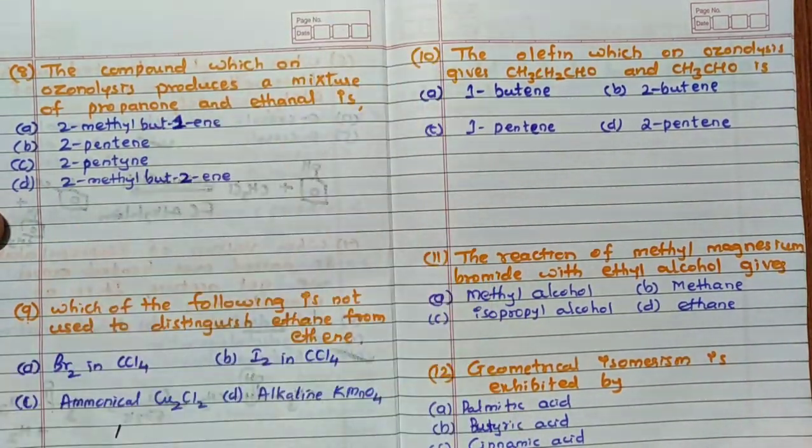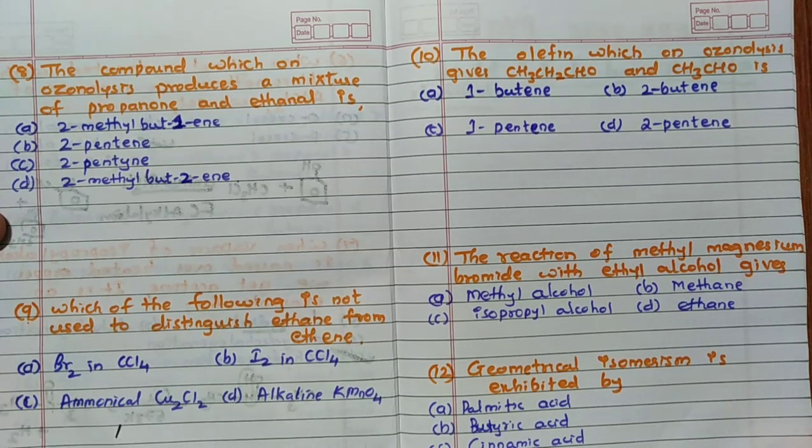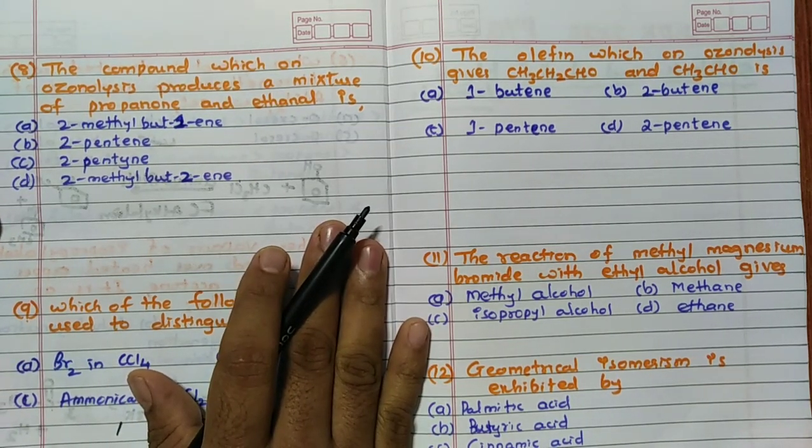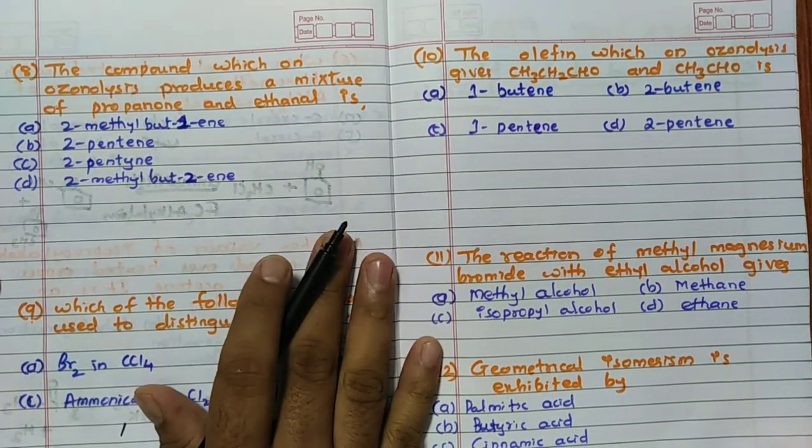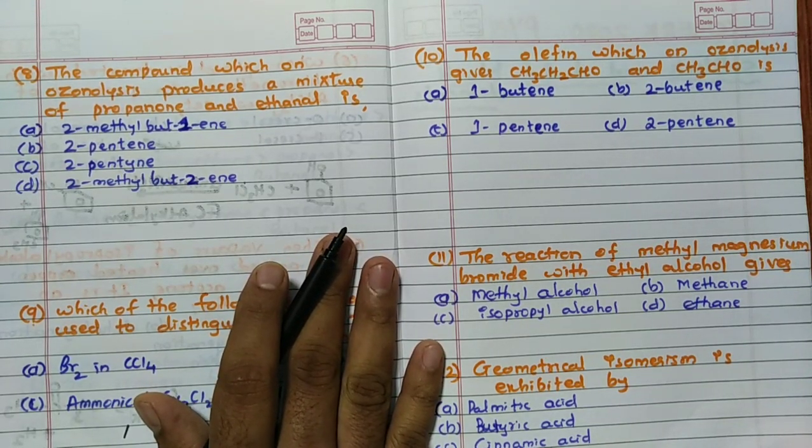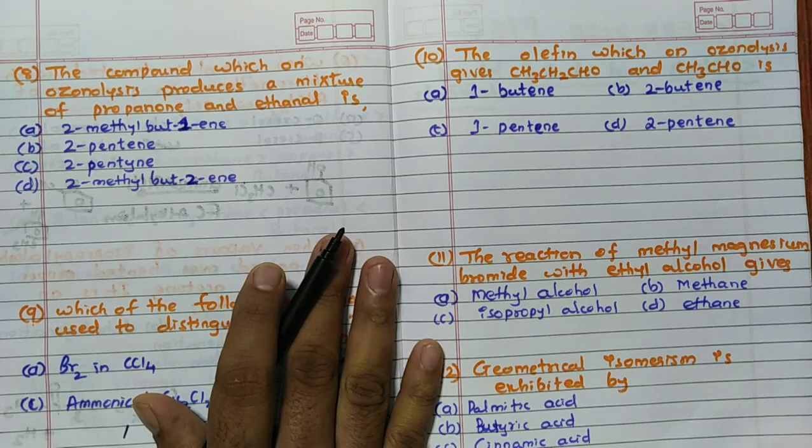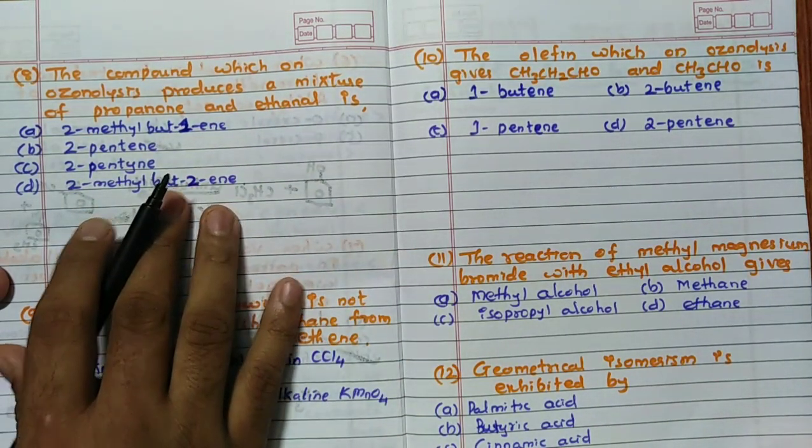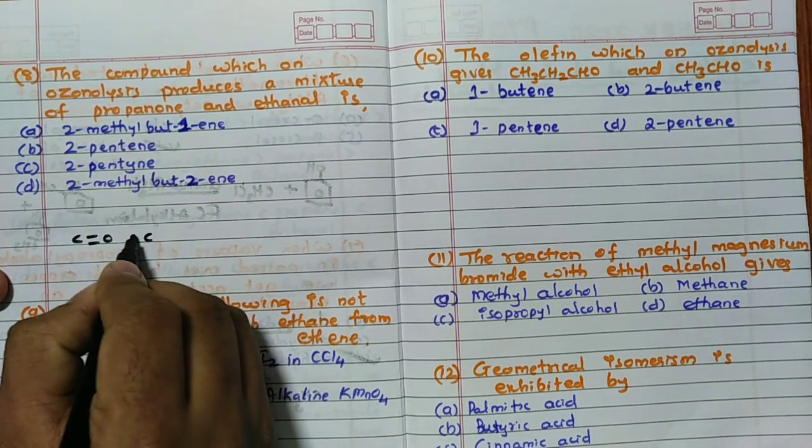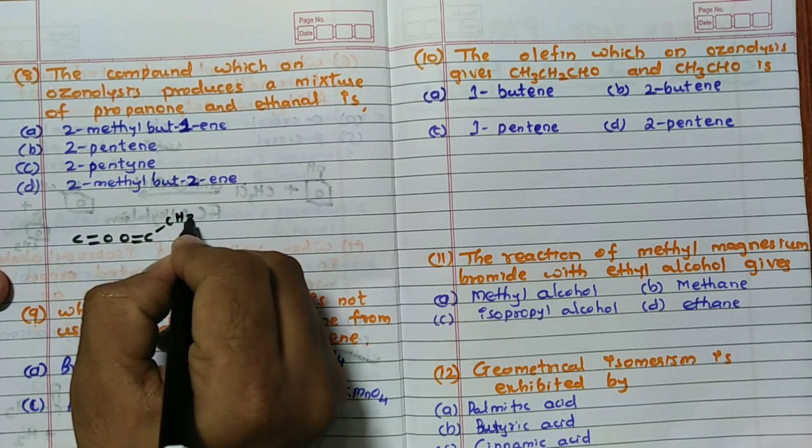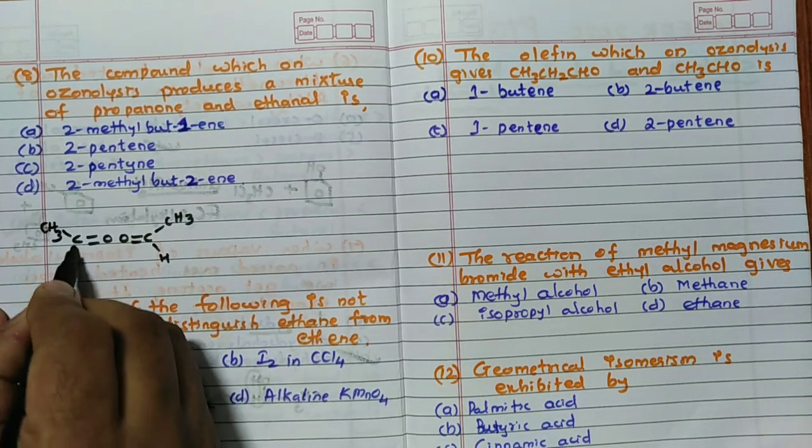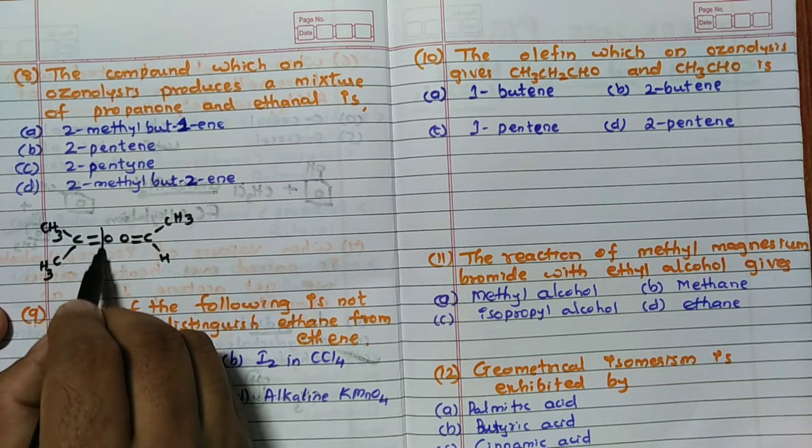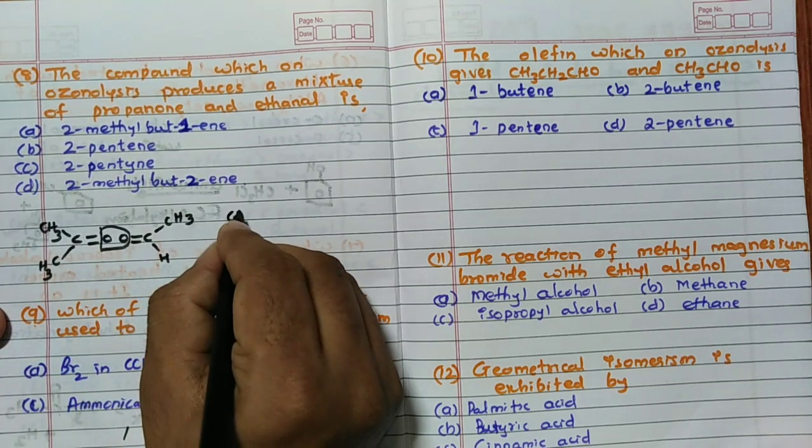Eighth one. The compound which is on ozonolysis produces a mixture of propanone and ethanol. So propanone and ethanol what is the alkene they are asking. How to identify I told you in case of the hydrocarbon chapter. If you have not seen please go through my final punch series hydrocarbon chapter. So what you have to do, these two product will write in such a way that this double bond O double bond O should be opposite to each other. So ethanol means remember CH3CHO acetaldehyde. And propanone is remember CH3-CO-CH3.